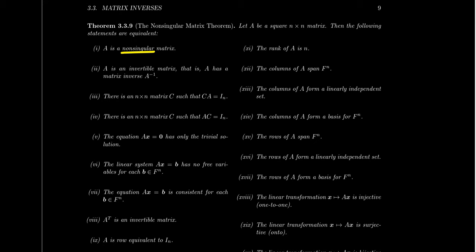So if a matrix is non-singular, what does that mean? First of all, it means that the matrix is invertible — that is, it has a matrix inverse, we'll call that A inverse. Conditions 1 and 2 are obviously the same thing because this is actually how we defined non-singular matrices. A matrix is non-singular if and only if it's invertible.